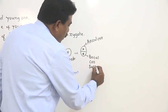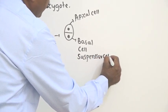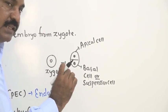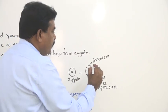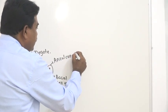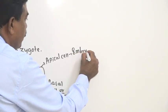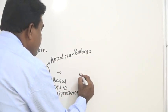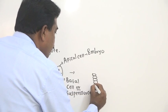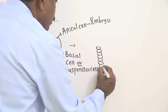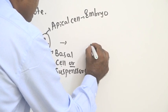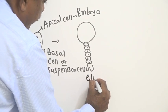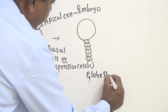The basal cell is present at the base, hence we call it the basal cell, and later it is also called the suspensor cell because it suspends into the endosperm to suck nutritive material and deliver it to the embryo. The apical cell develops into the embryo. The suspensor cell undergoes mitosis and forms a straw-like structure, while the apical cell becomes globe-shaped.